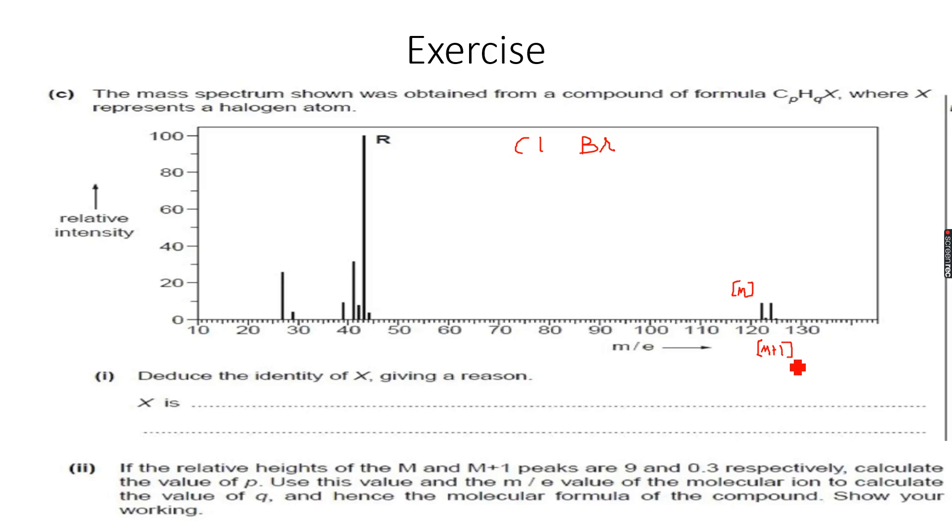You can see M+1 is so small, it's very difficult to even see it. That's how small the abundance of carbon-13 is.